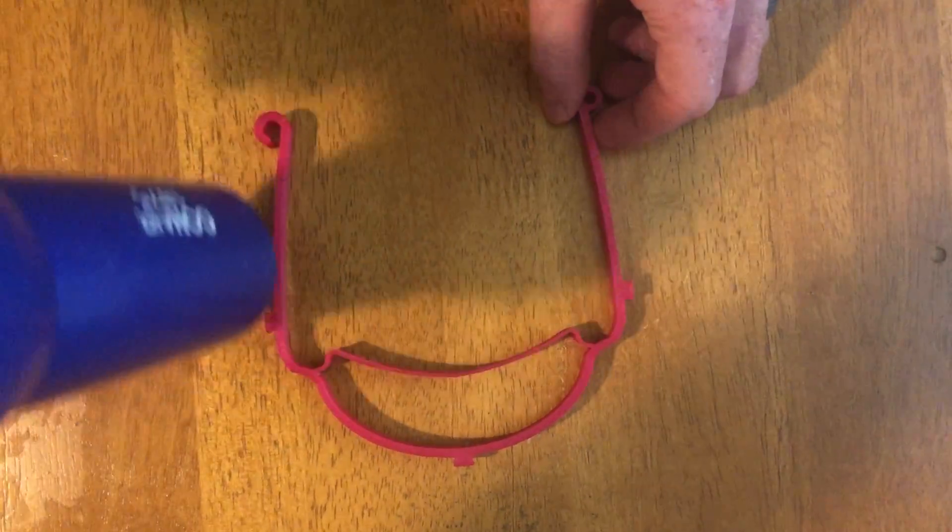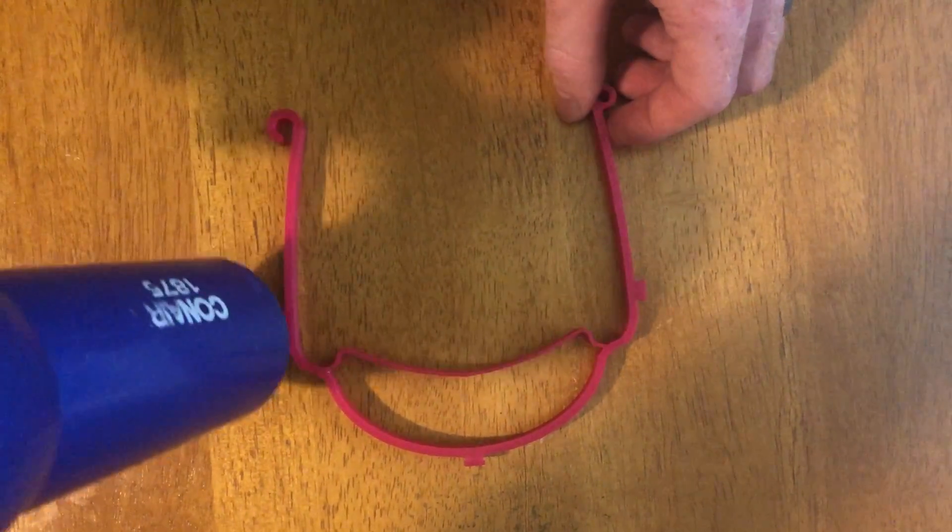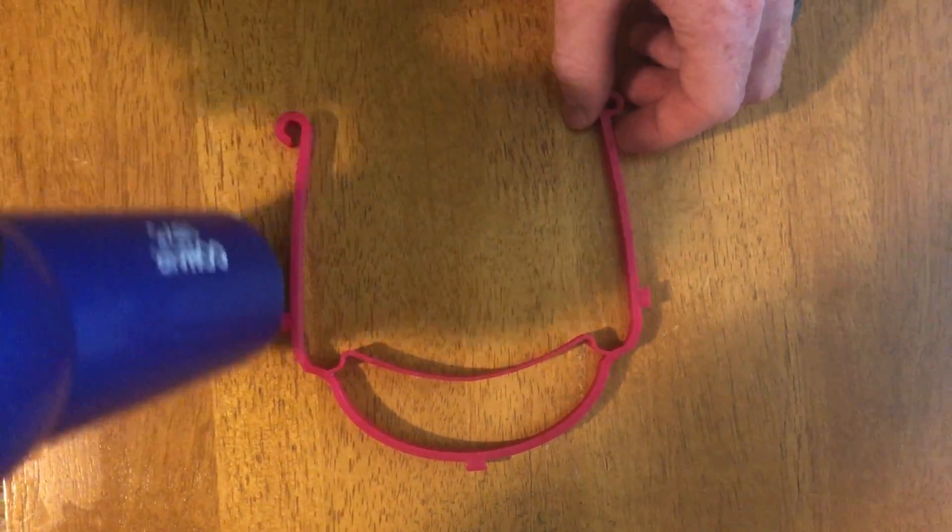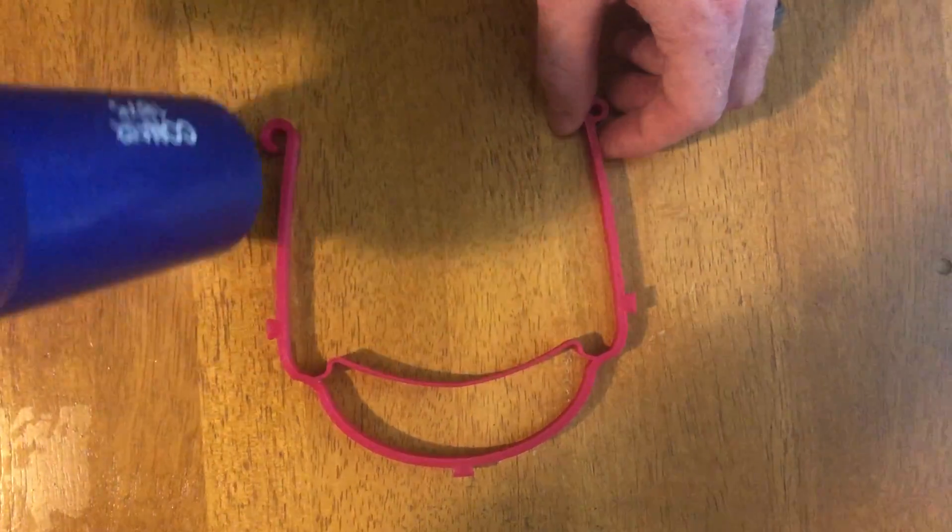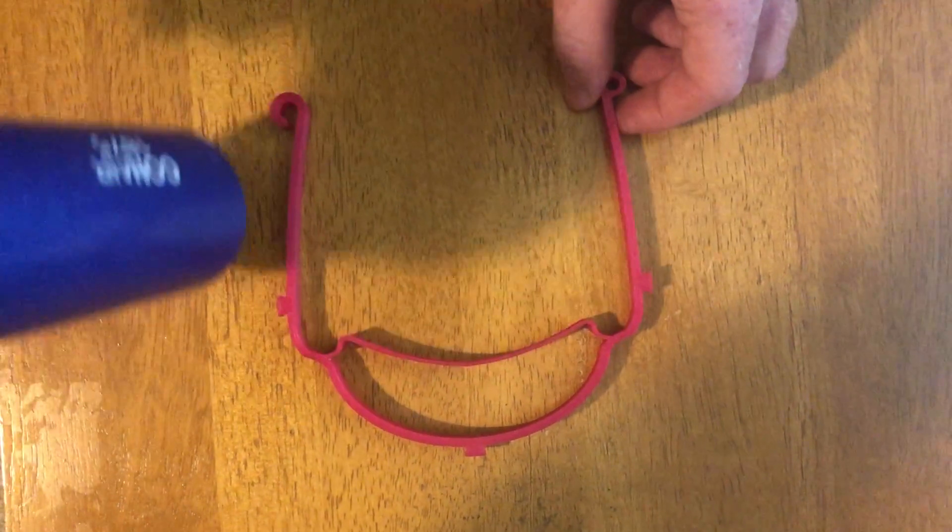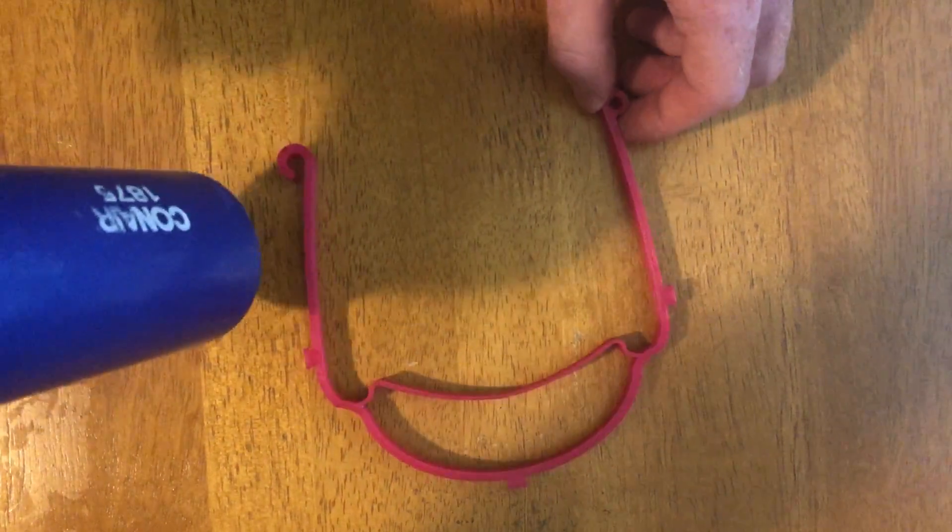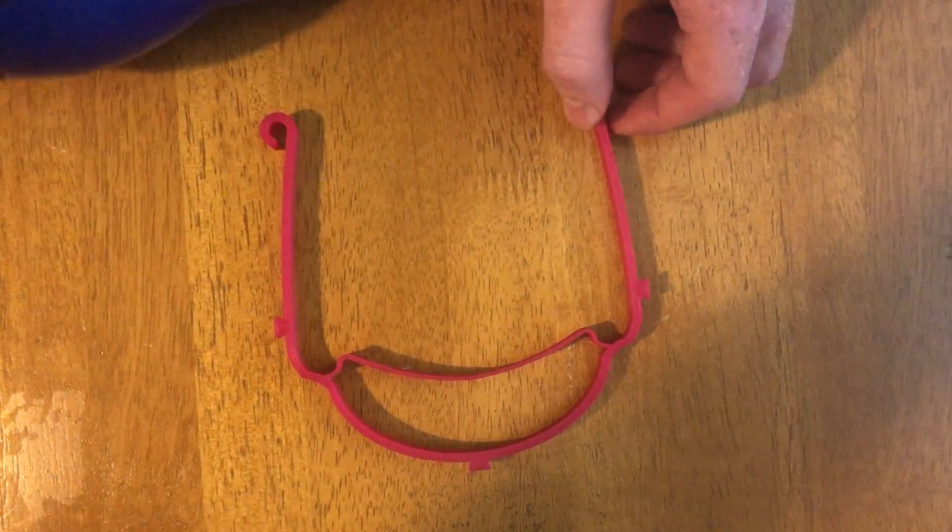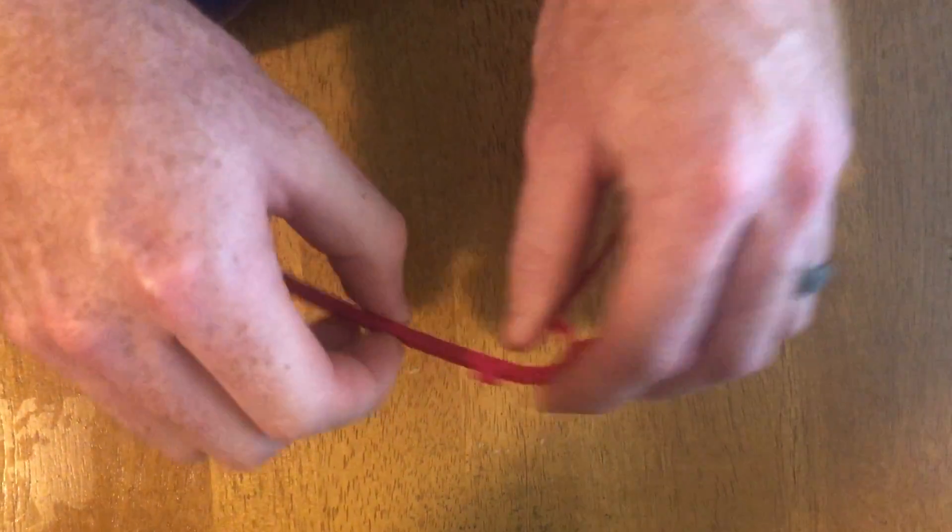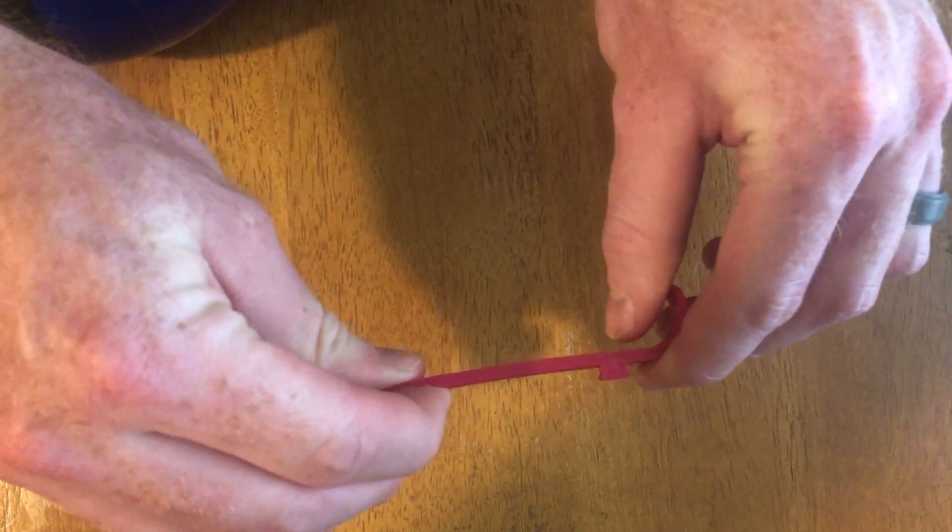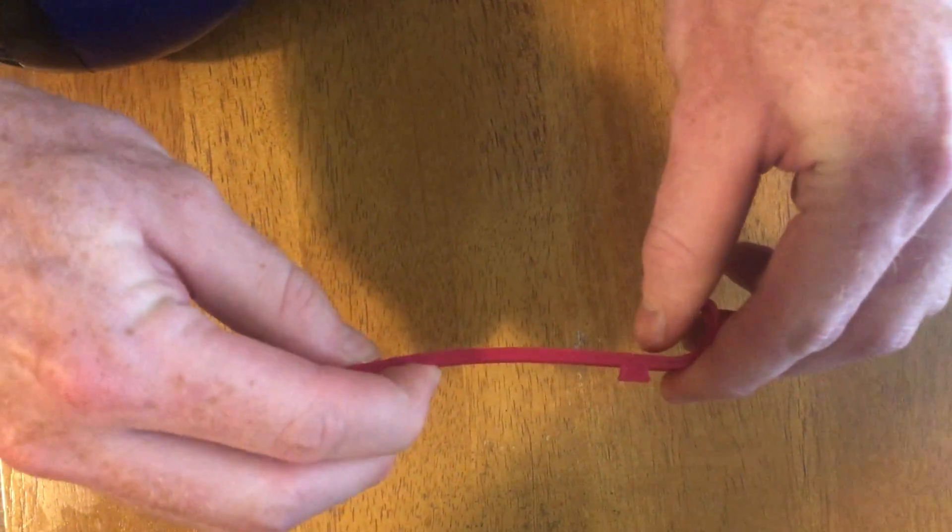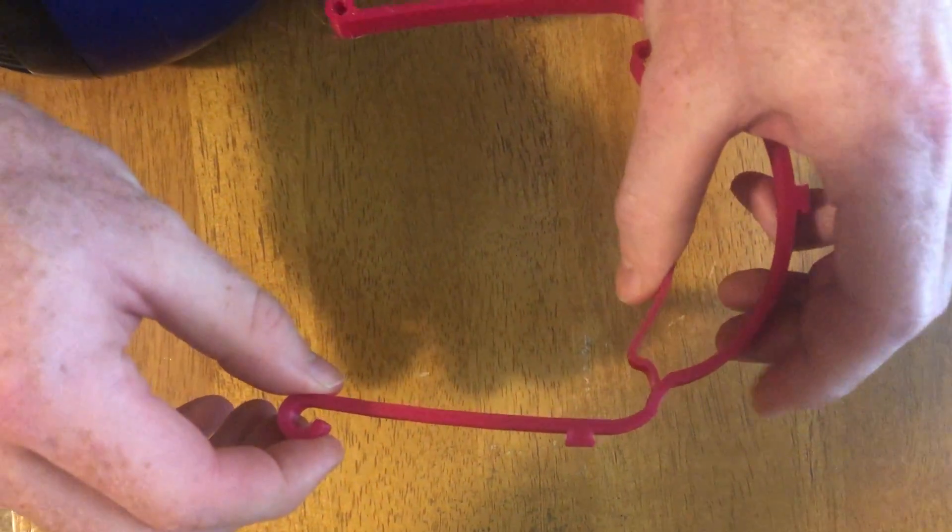I'm just going to do one side at a time, heating up the entire arm of the frame. After some light heating, I should be able to take the plastic and bend it outwards and adjust its size.